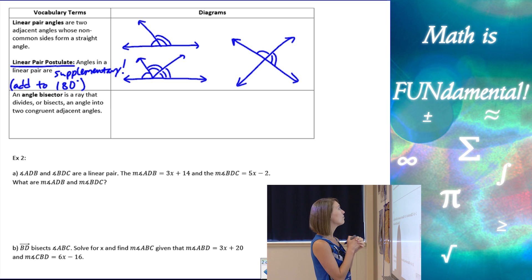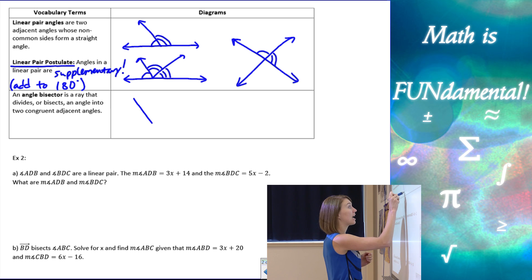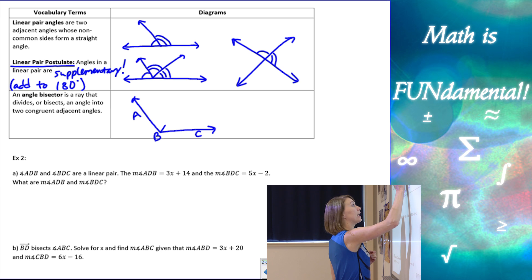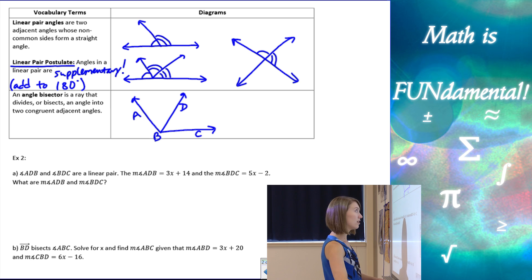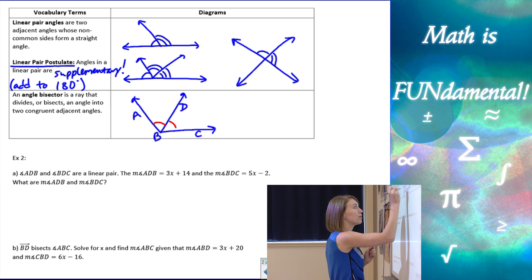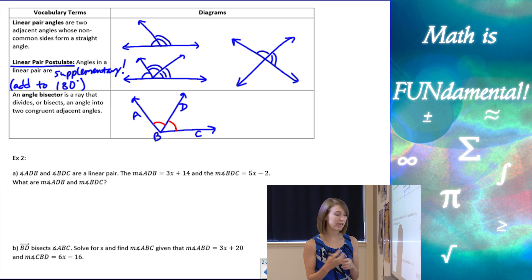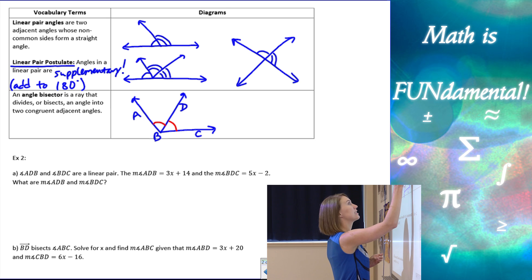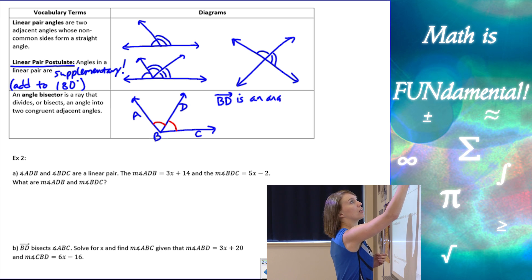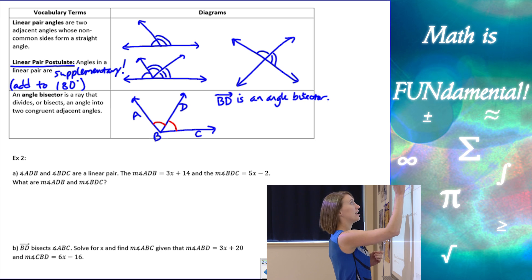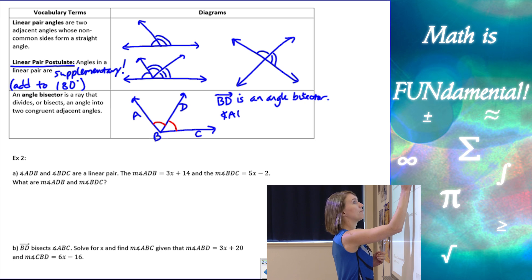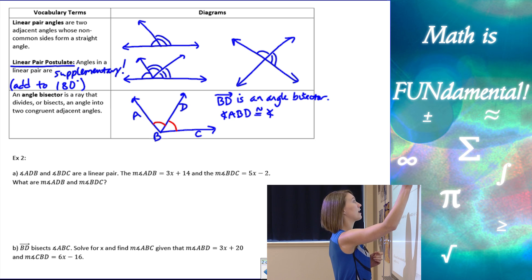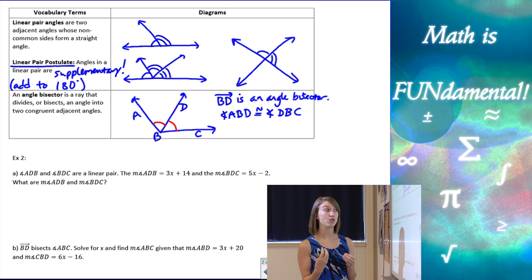The last term: an angle bisector is a ray that divides or bisects an angle into two congruent parts. If I have angle ABC and I take a ray and cut it exactly in half, the two resulting parts have to be congruent — the arc marks have to match. Then ray BD is an angle bisector, and angle ABD has to be congruent to angle DBC.